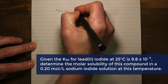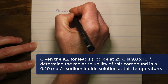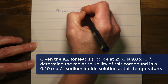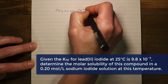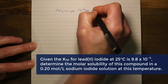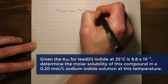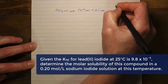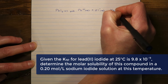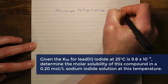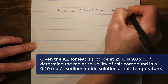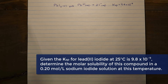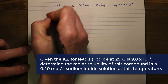We start by writing the equilibrium equation, which is no different from before: lead(II) iodide dissociates into lead(II) ions and two iodide ions. We keep the same conditions as last time, so the Ksp is the same value as before.